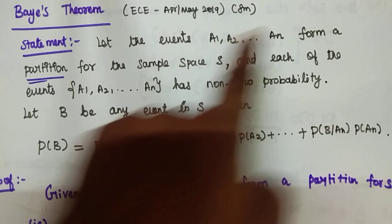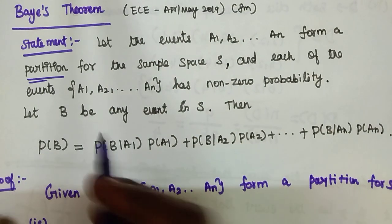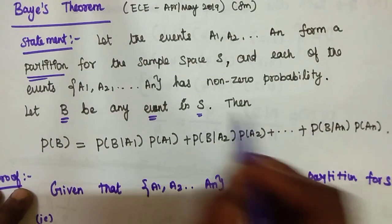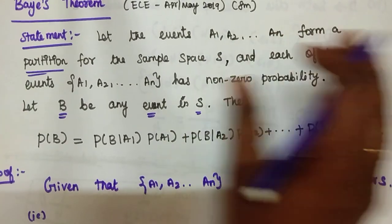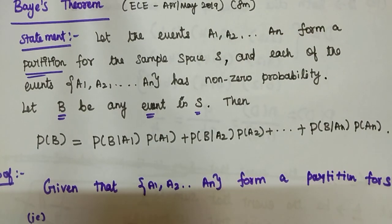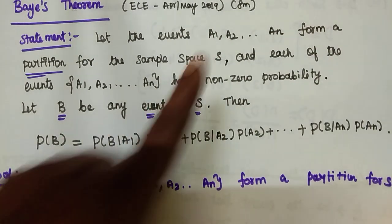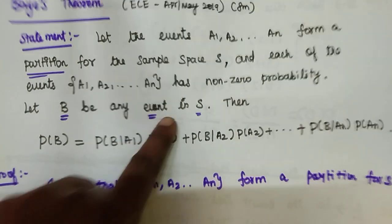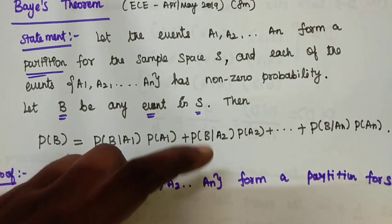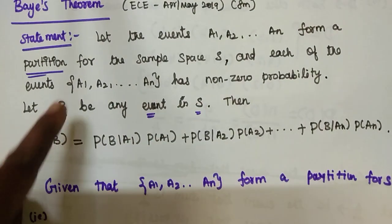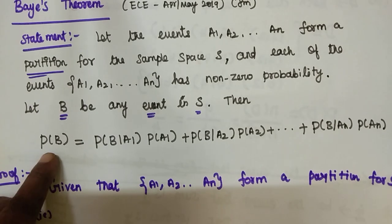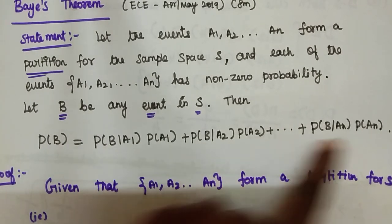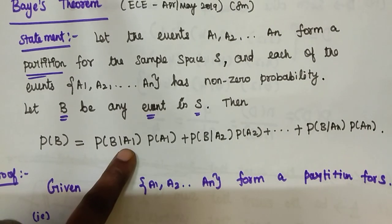This is a partition. Then for any event B in S — A1, A2, n and so on is the sample space. If there is a partition, the event in S has a probability. That is the formula.